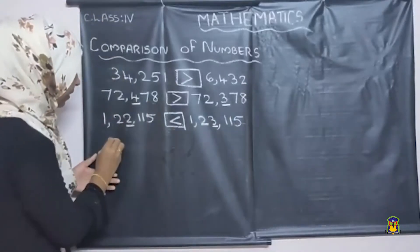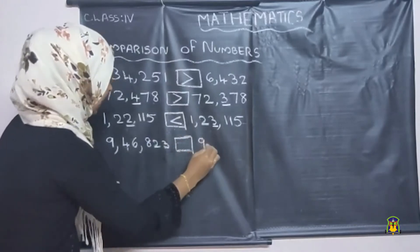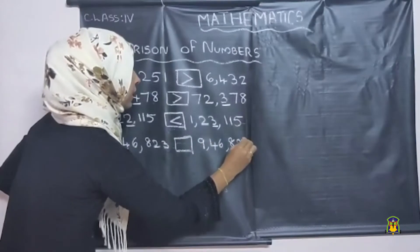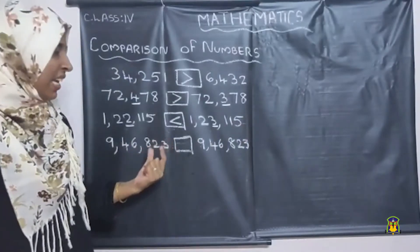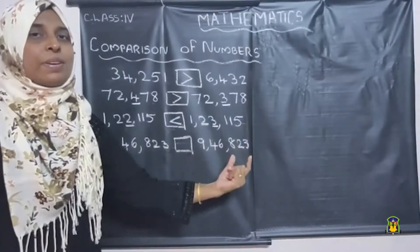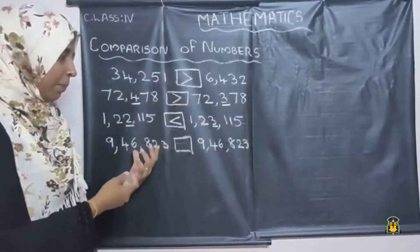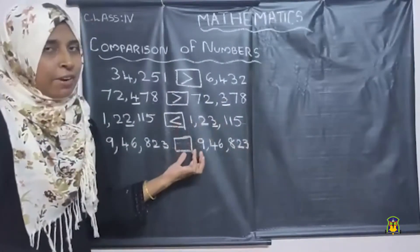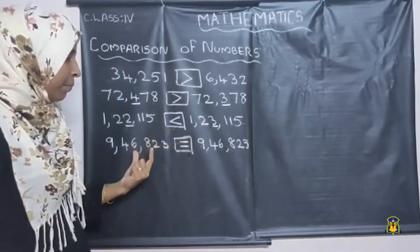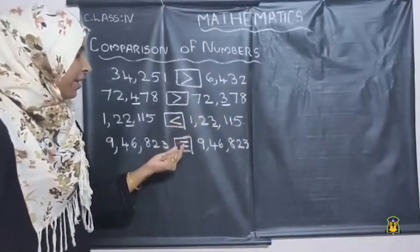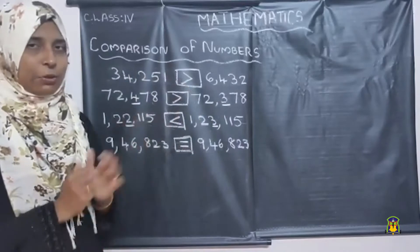I am going to write one more example: nine lakh forty-six thousand eight hundred twenty-three and nine lakh forty-six thousand eight hundred twenty-three. Both numbers are six-digit numbers and each digit in both numbers is the same — nine, four, six, eight, two, three — same numbers on both sides. Which symbol do we want to use? Yes, equal to. If the same numbers are on both sides, we use the equal to symbol.